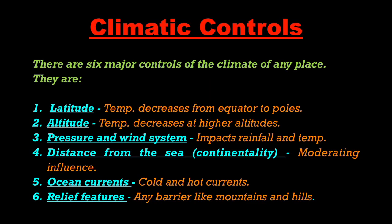Let's see the Climatic Controls. There are six major climatic controls that define the climate of any place. The first is Latitude — temperature decreases from equator to poles due to the slanting of solar radiation. The second is Altitude — as one moves to higher altitudes, temperature decreases. In general, for every 160 meters of height, temperature decreases by 1 degree Celsius.